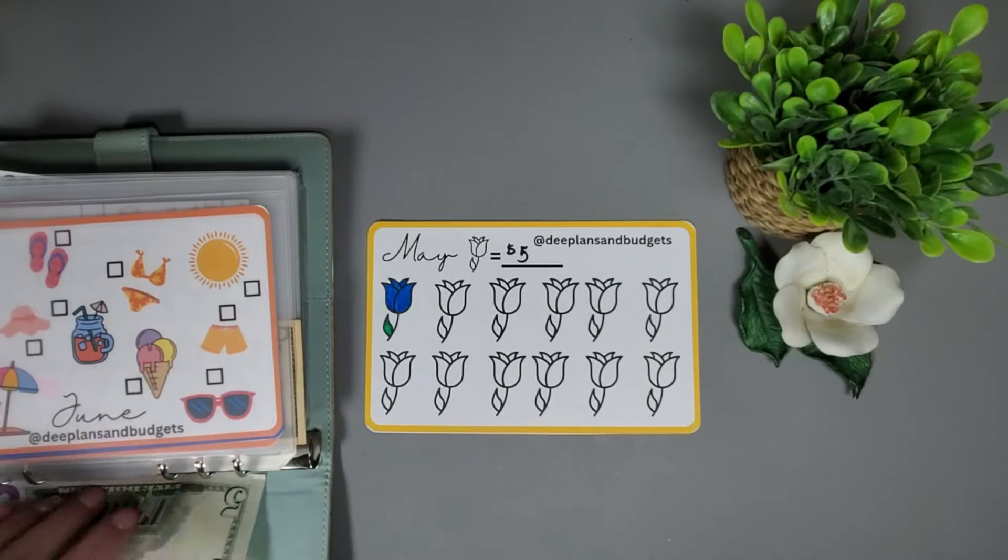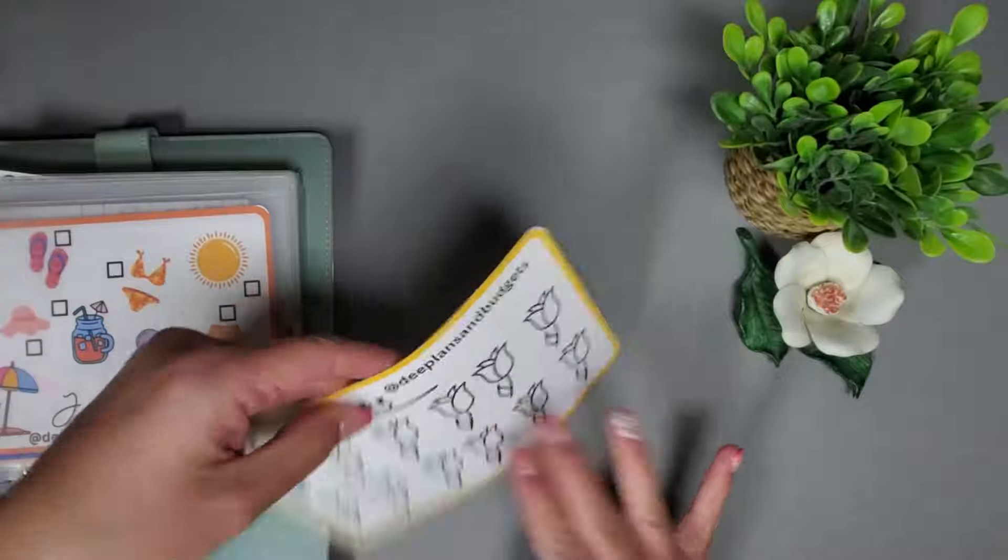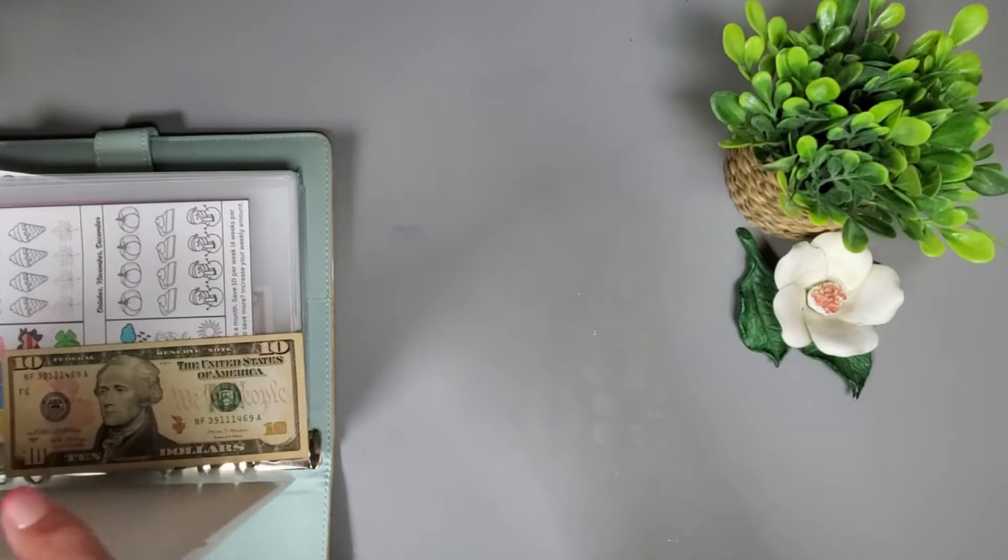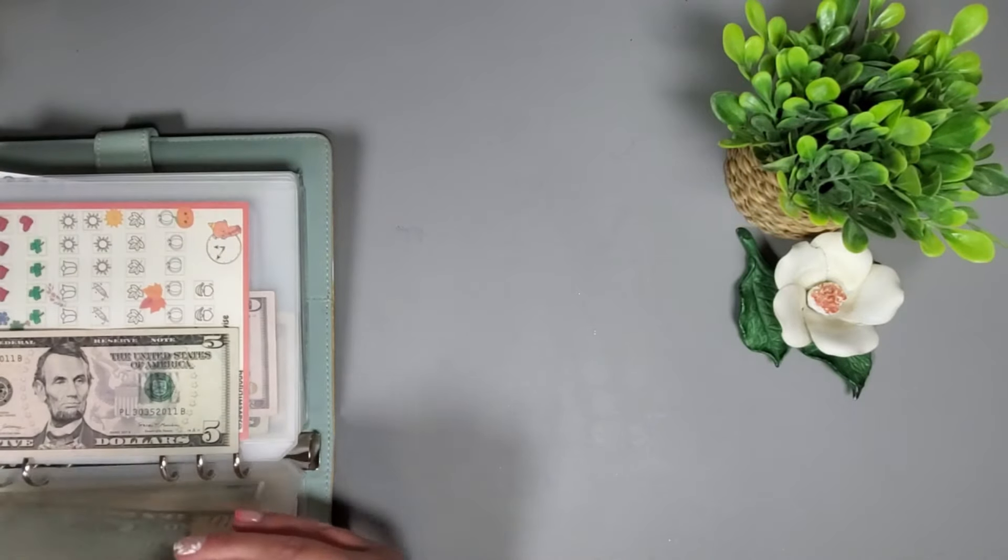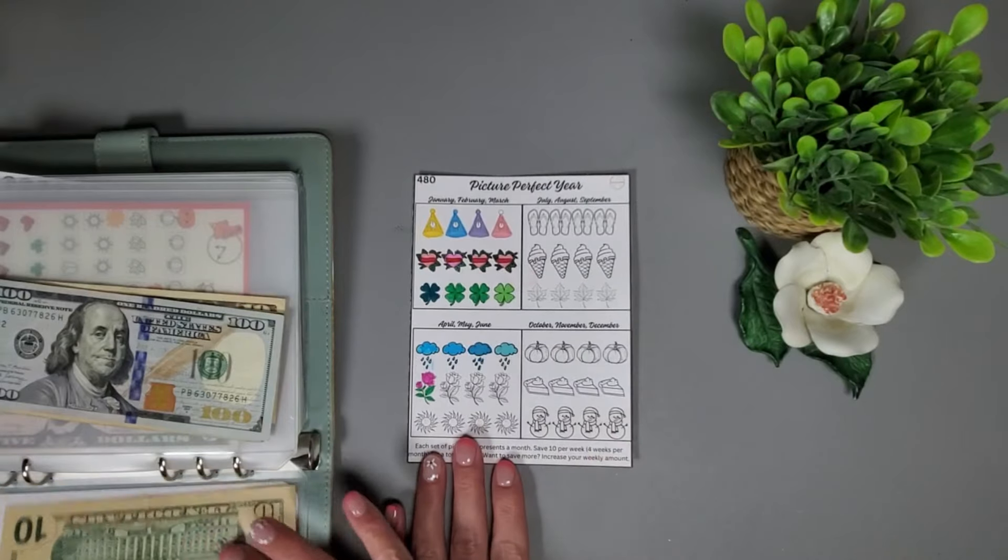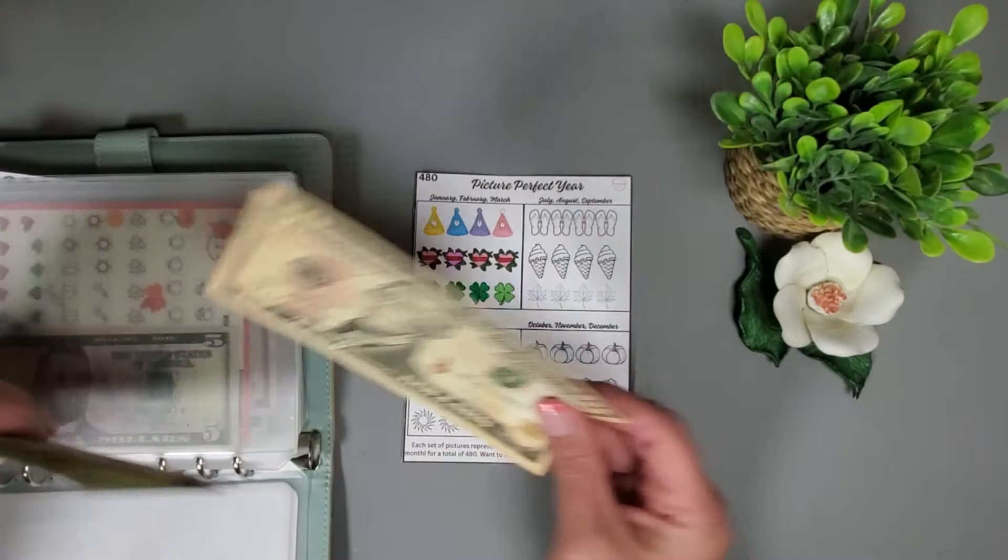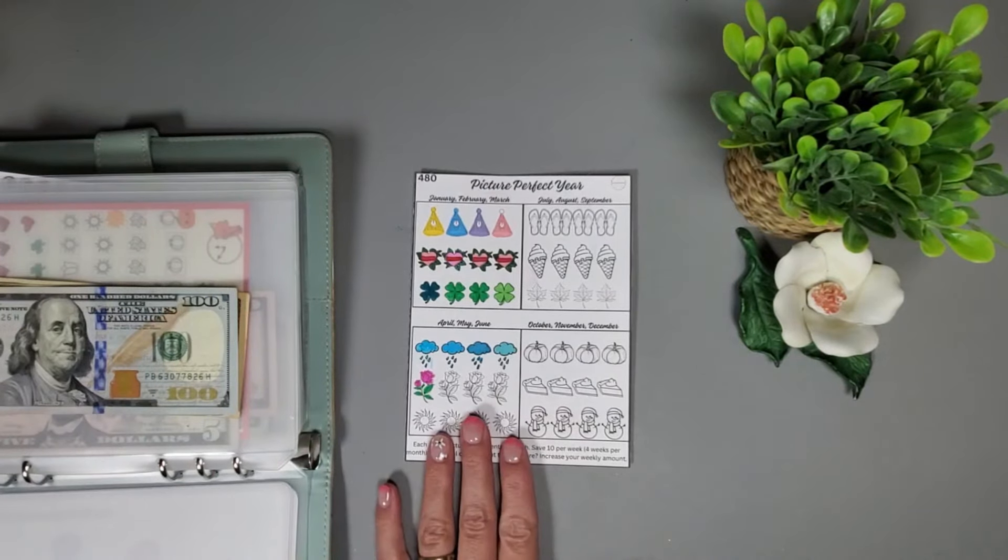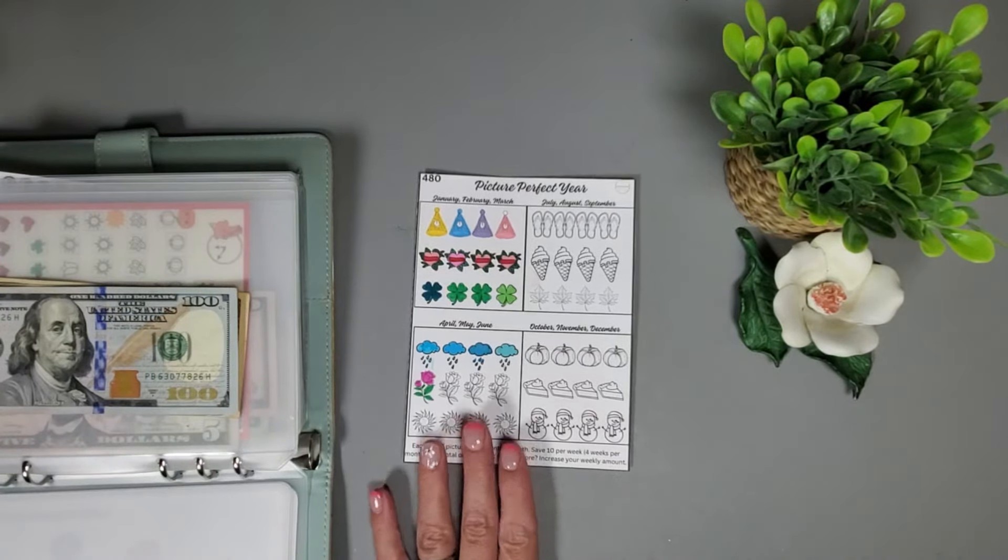I have one of those colored in and five dollars will be going in to start this challenge for May. And then we have this challenge from Hands and Bands and we do ten dollars for each icon, so I have my ten dollars here that I'm going to be adding and I will go ahead and get one of these roses colored.